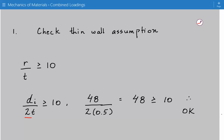Plugging in the numbers: the inner diameter is 4 feet, or 48 inches, divided by 2 times the thickness of 0.5 inches, giving 48, which is greater than or equal to 10. So this can be classified as a thin wall pressure vessel, and we can use the equations for hoop and longitudinal stress.